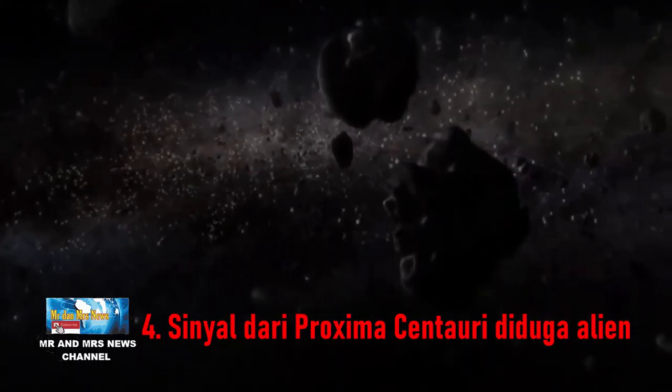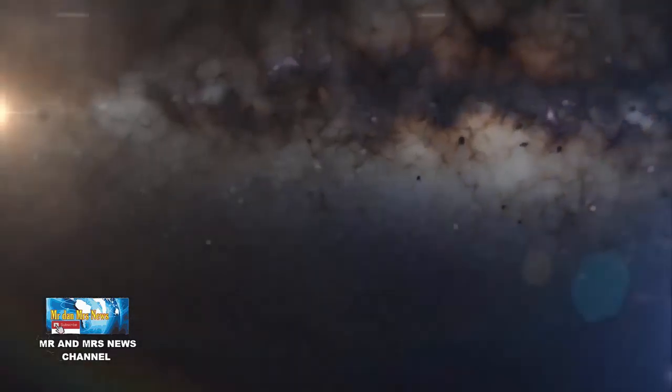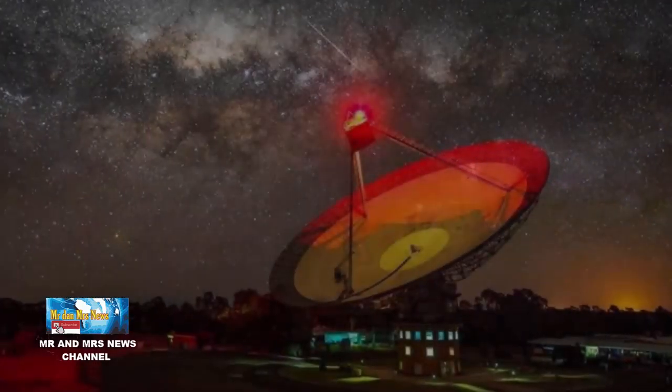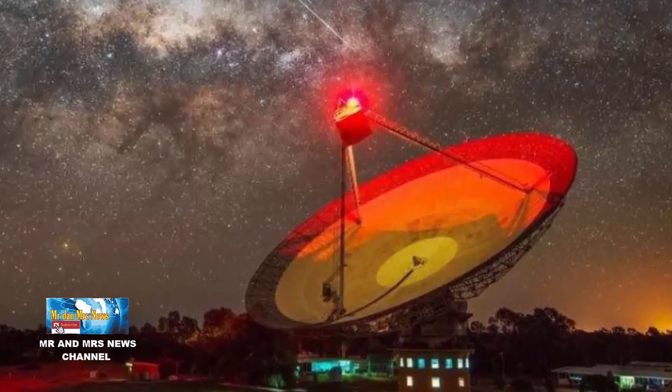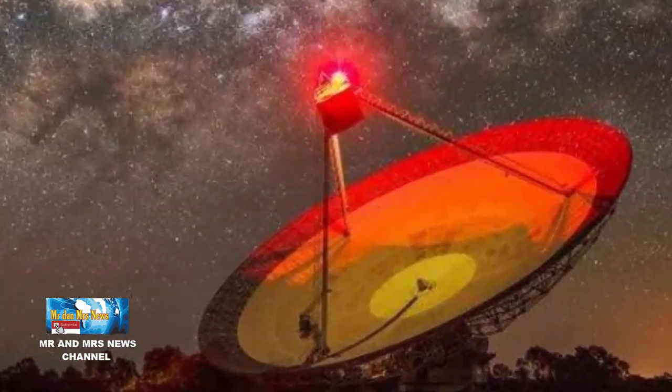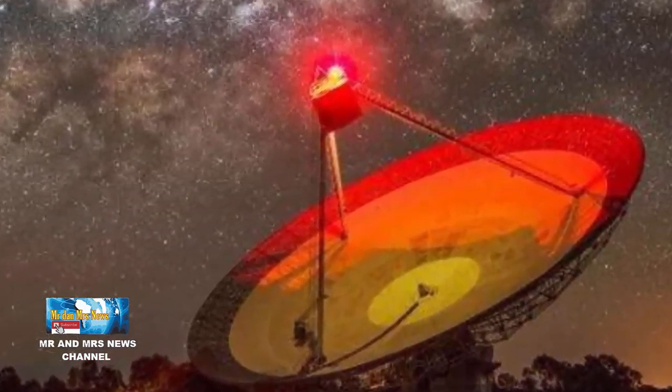Yang keempat, sinyal dari Proxima Centauri diduga alien. Baru-baru ini, peneliti mengumumkan telah menangkap pancaran energi misterius yang berasal dari Proxima Centauri, sistem bintang terdekat dari matahari yang berjarak 2,4 tahun cahaya. Gelombang radio 980 MHz ini dideteksi oleh Teleskop Parkes di Australia pada April dan Mei 2019. Sinyal ini ditangkap sekali dan tidak pernah muncul lagi.